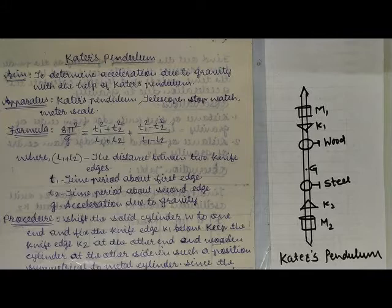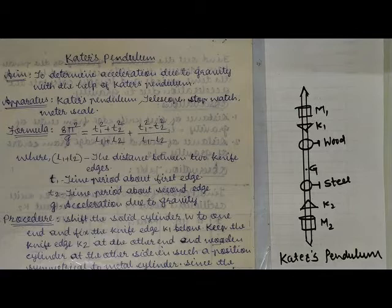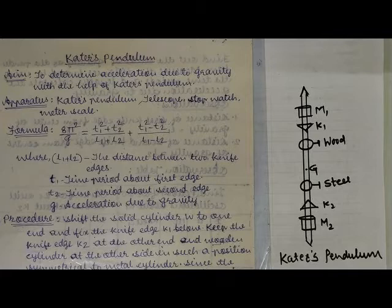Everybody knows acceleration due to gravity — that is small g — and its value is also known to us: 9.8 meters per second square, or 980 centimeters per second square. So already you know what your final answer will be. Your answer should come around 980 because we will use all parameters in CGS units, not MKS, though we can convert between unit systems. The final answer should be 9.8 meters per second square.